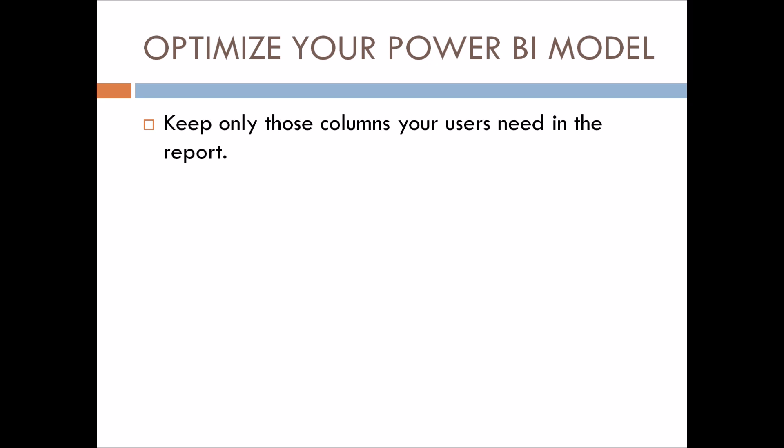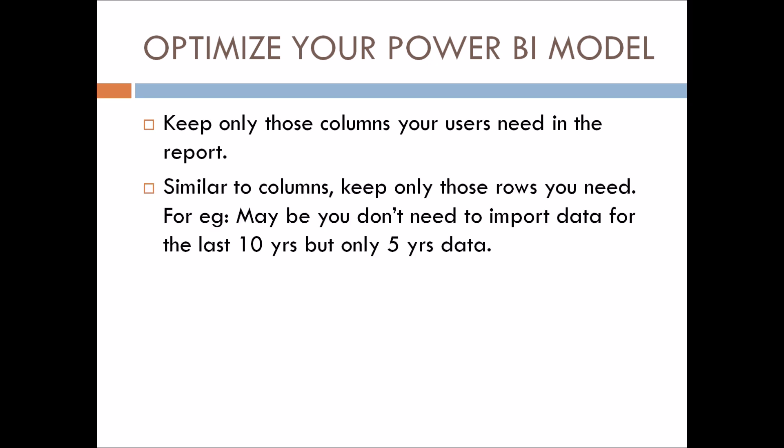The second point is: similar to columns, keep only those rows you need. Sometimes we have millions of records in our tables, but the number of records we really want to show users is very less. For example, maybe you don't need to import data for the last 10 years — only 5 years of data is required. Try to use incremental refresh and filter out the data from the source itself, so the model size and performance both improve.